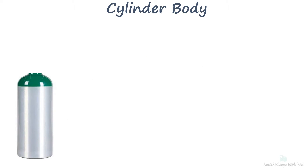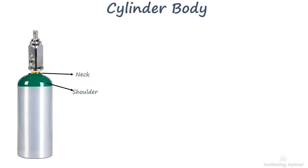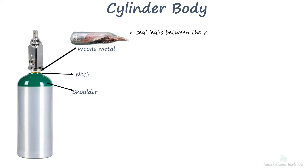The curved upper part of the body is called the shoulder, which tapers into a neck. The neck ends in a tapered screw thread into which the valve is fitted. When the valve is screwed to the cylinder neck, a fusible material called Wood's metal is used to seal leaks between the valve and the cylinder.